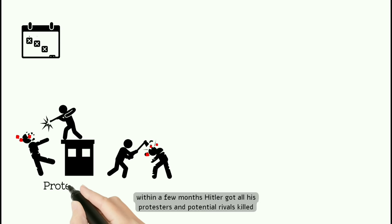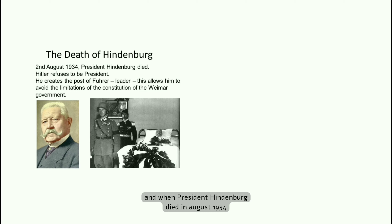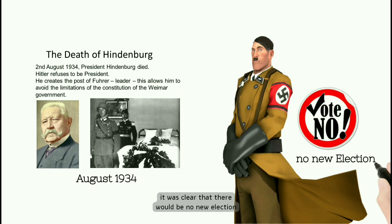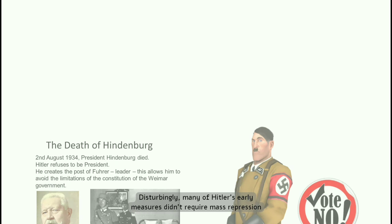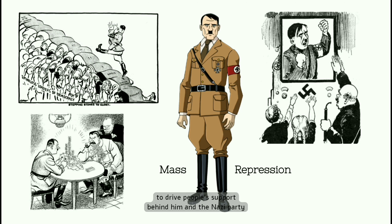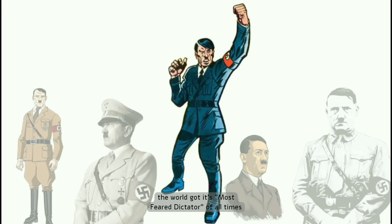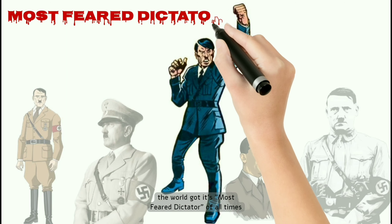Within a few months, Hitler got all his protesters and potential rivals killed, other parties were disbanded, and the press was abolished. And when President Hindenburg died in August 1934, it was clear there would be no new election. Disturbingly, many of Hitler's early measures didn't require mass repression to drive people's support behind him and the Nazi party. And this is how the world got its most feared dictator of all times.